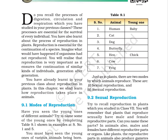We have filled the column of animals and given two correct answers in the young one column. Serial number 1, animal: human, young one: baby. Serial number 2, animal: cat, young one: blank. Serial number 3, animal: dog, young one: blank. Serial number 4, butterfly, young one: blank. Serial number 5, hen, young one: chick. Serial number 6, animal: cow, young one: blank. Serial number 7, frog, young one: blank. Make this table in your notebook and fill the correct answers in the blank spaces.